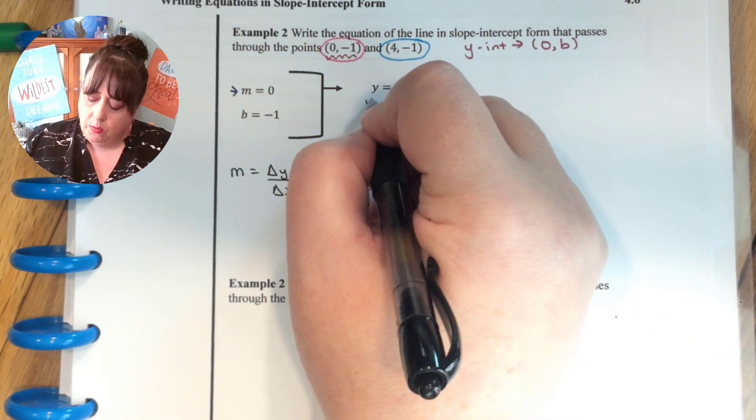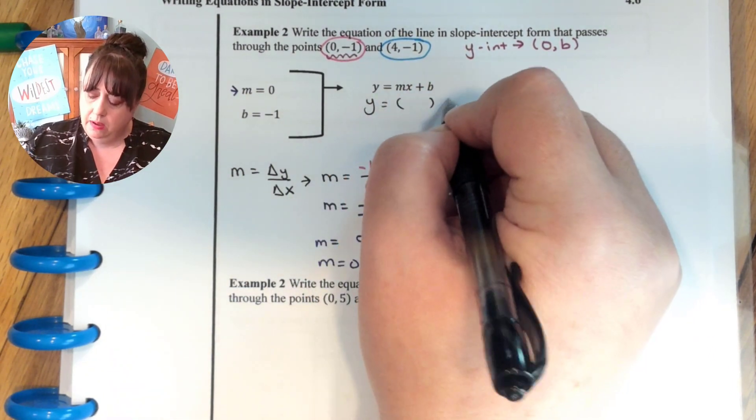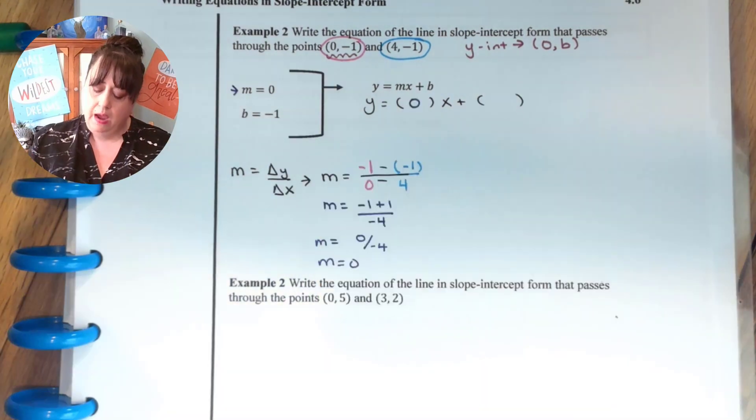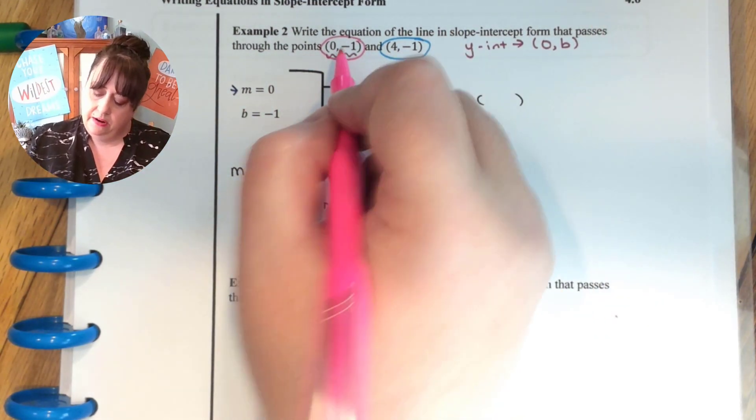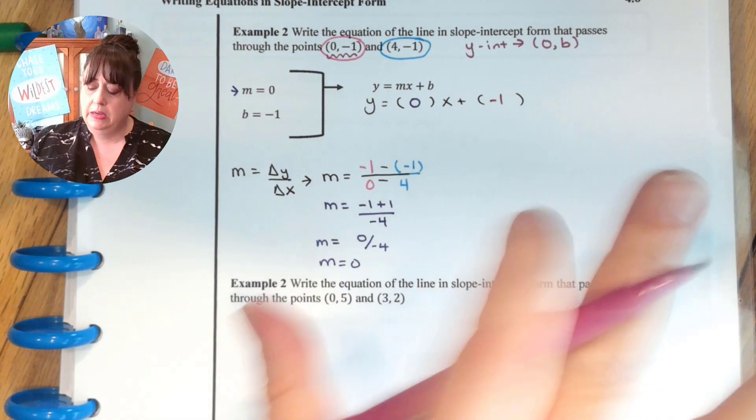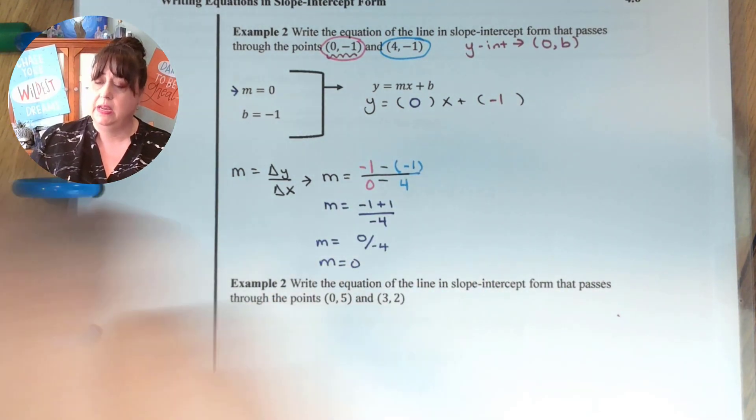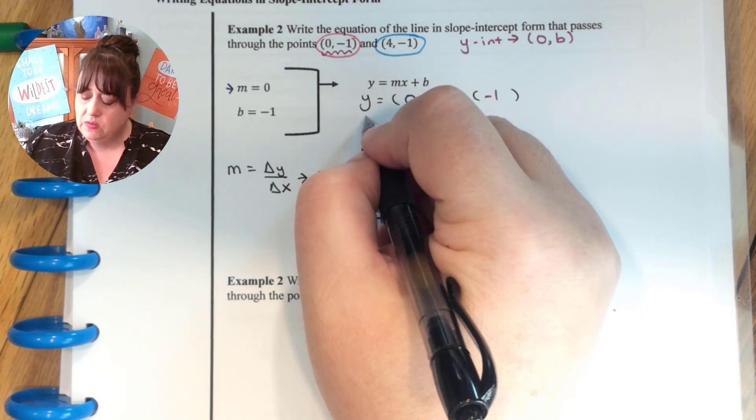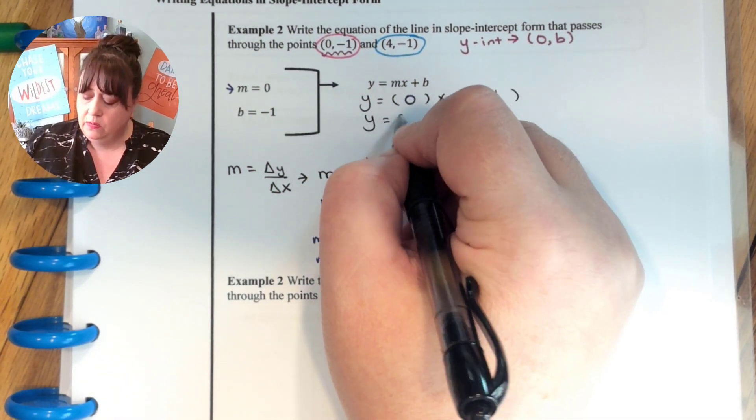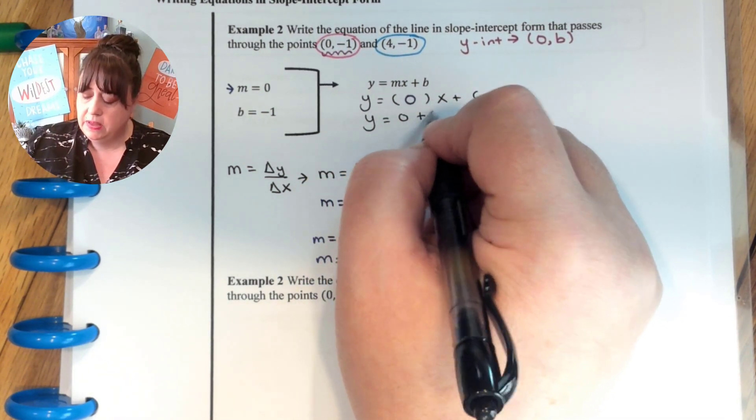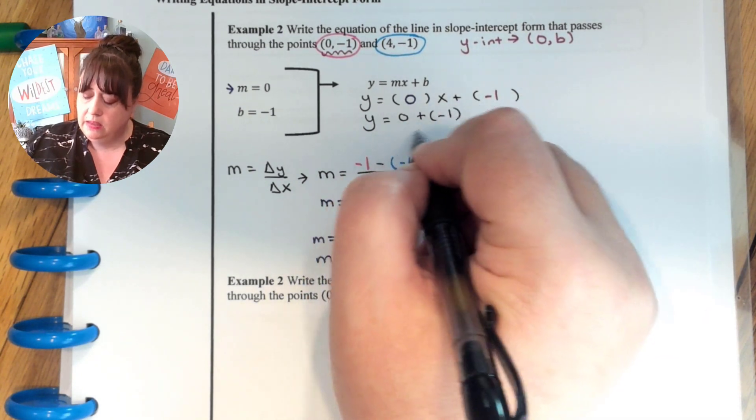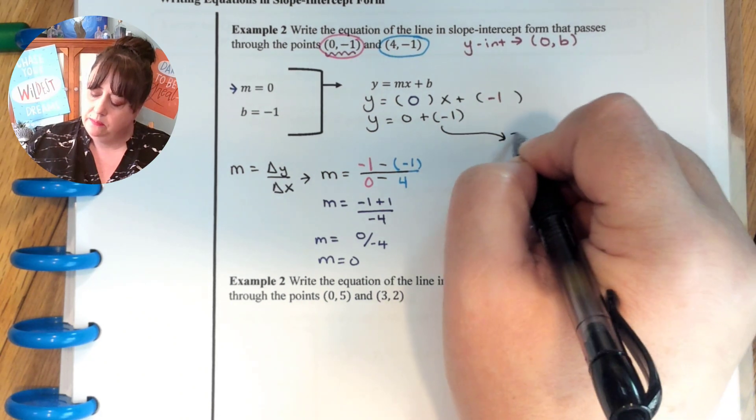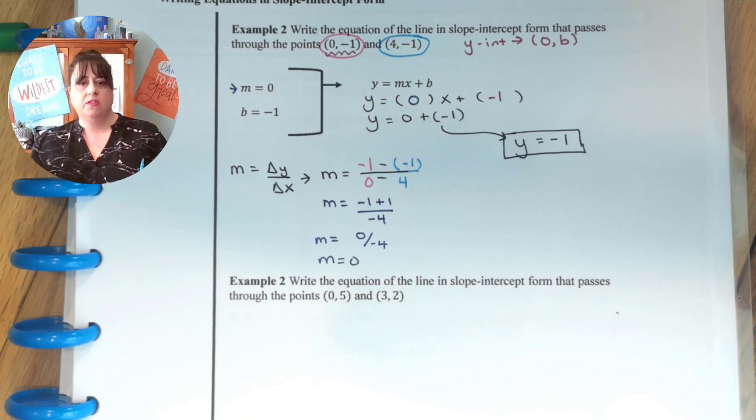So now y equals mx plus b. I know what m is. m is 0. I know what b is. b is right here, negative 1. And now I clean this up. What is 0 times x? 0 times x is 0. So that just goes away. 0 plus a negative 1 is just y equals negative 1. This is a nice horizontal line.